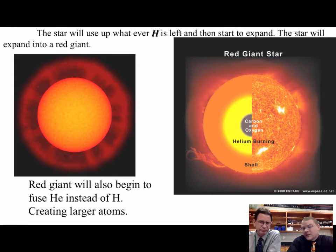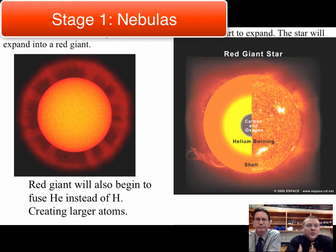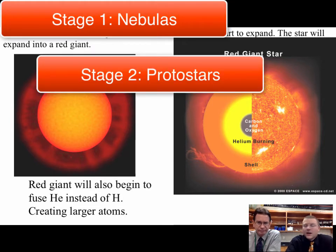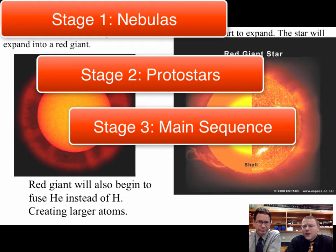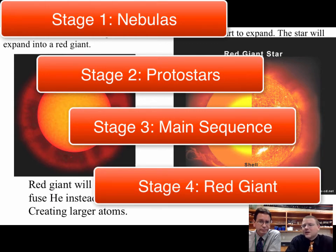So all stars start as nebulas. Those nebulas collapse, create protostars when fusion starts. After fusion starts, we've got main sequence where it just burns throughout the remainder of its life, converting hydrogen to helium. Then when the hydrogen's gone, it expands into this red giant, now burning helium in its core instead of the hydrogen.